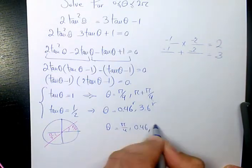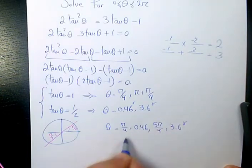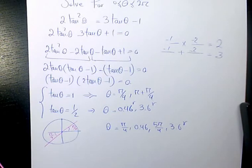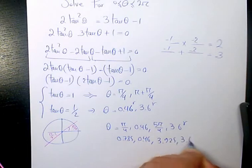So the answers are π/4, 5π/4, 3.6 radians. Or you can say 3.14 divided by 4 is 0.785 to be consistent. 5π/4 is going to be 3.925 and then 3.6. These are all in terms of radians.